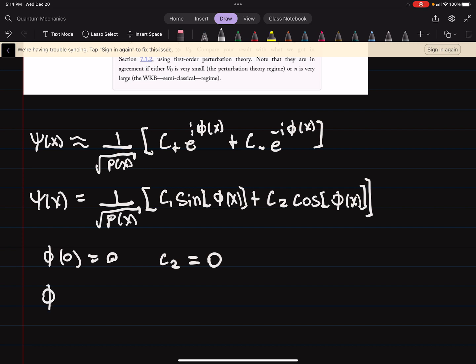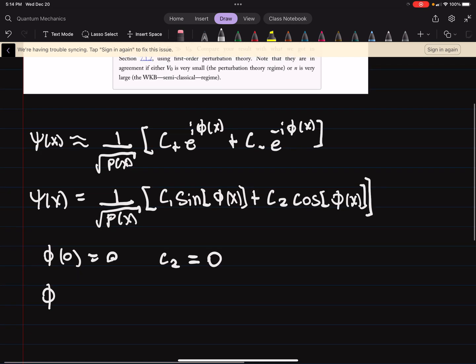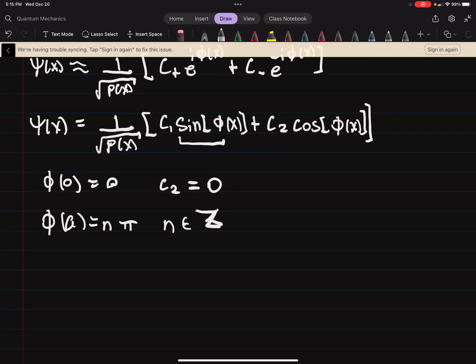Then P at the boundary, so in this problem our boundary is at A, needs to equal where this is equal to 0, which is at integers of n*pi. So n is in the integers. That tells us then that the integral of P(x) dx from 0 to A is equal to h-bar times this phi, which we now know is n*pi.